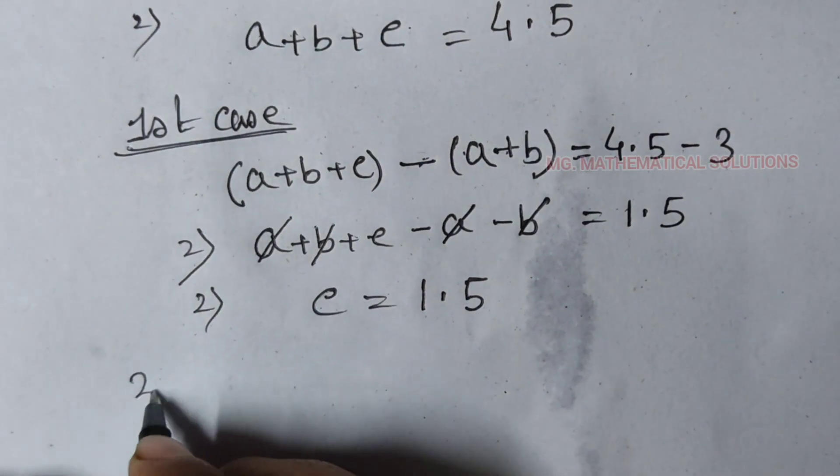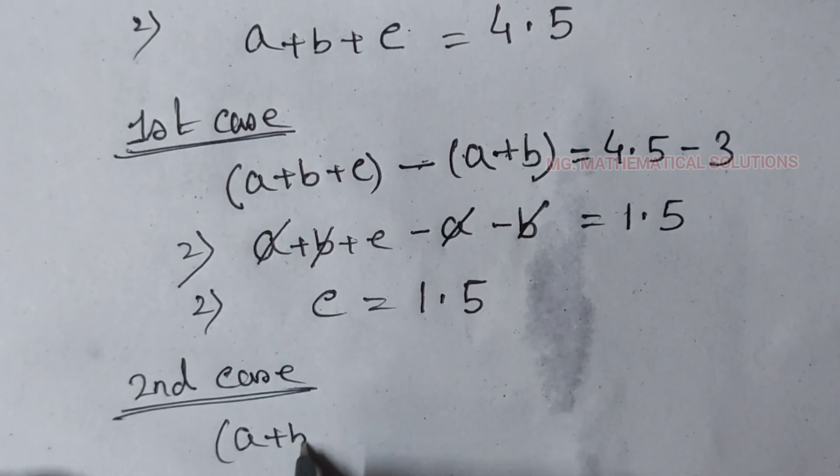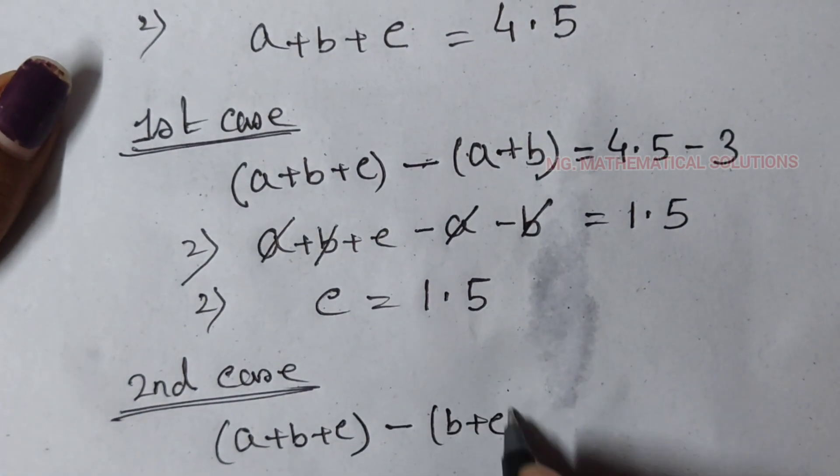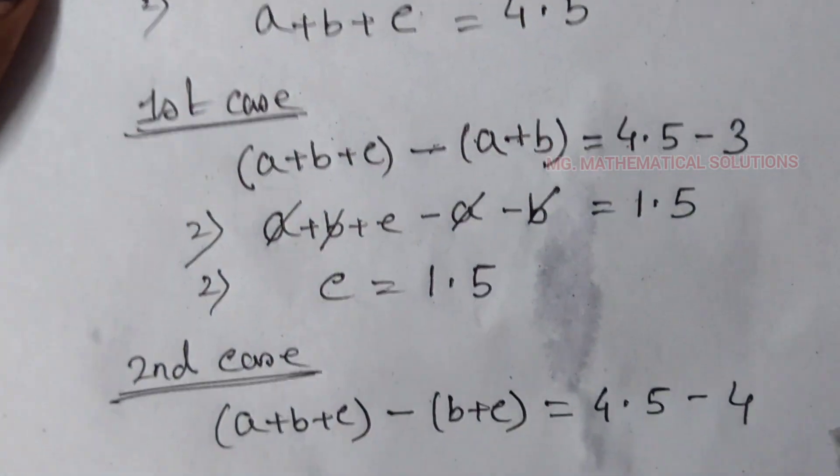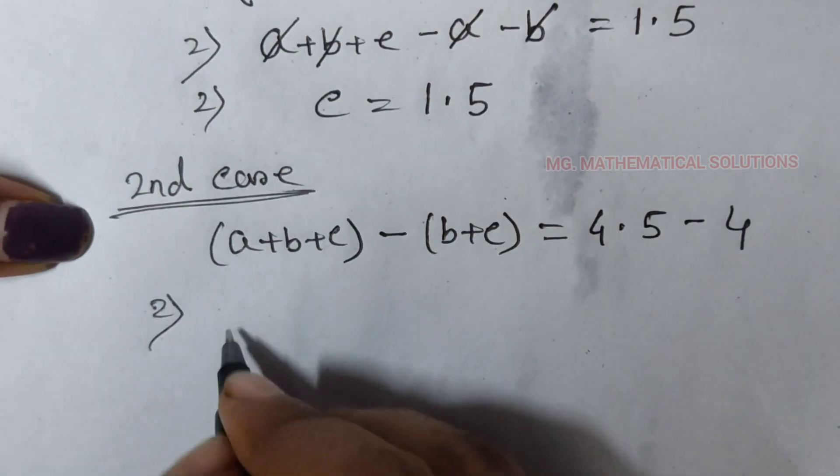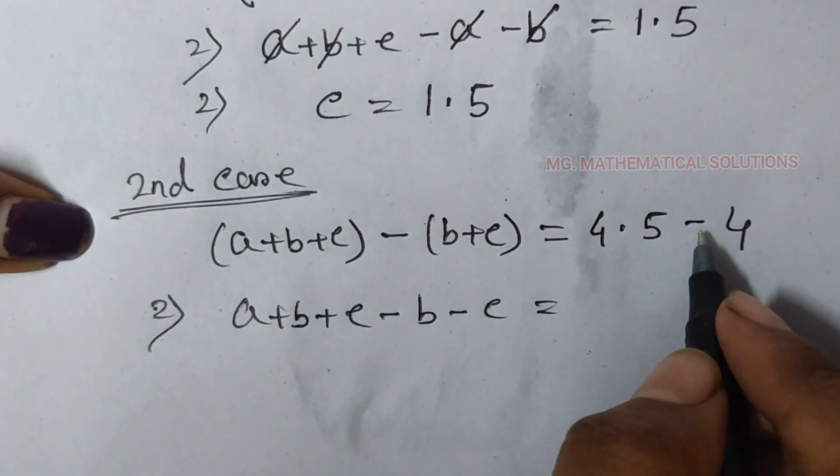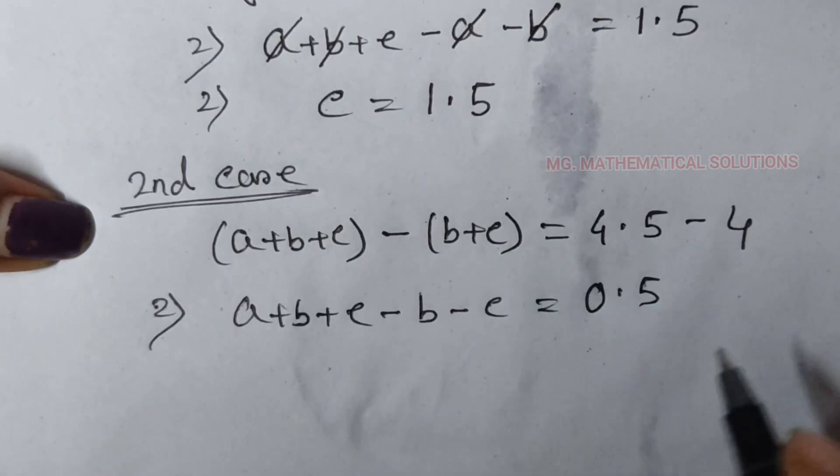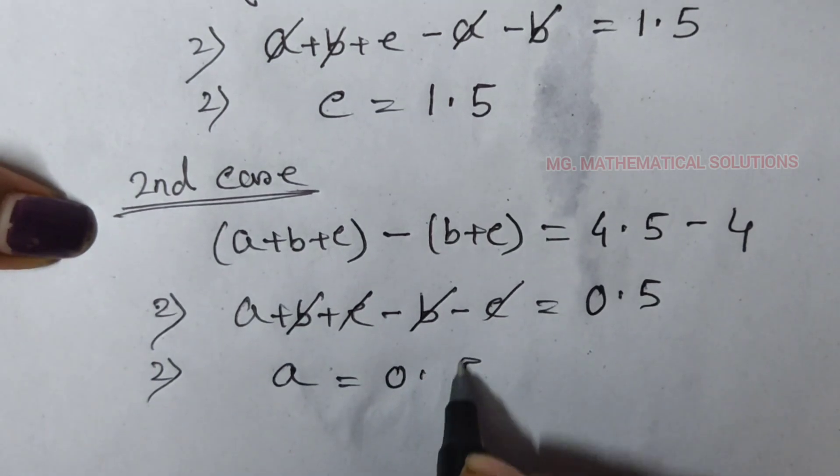Next, second case. A plus b plus c minus b plus c equal to 4.5 minus 4. That implies a plus b plus c minus b minus c. 4.5 minus 4, that's 0.5. B cancelled, c cancelled. This implies a equal to 0.5.